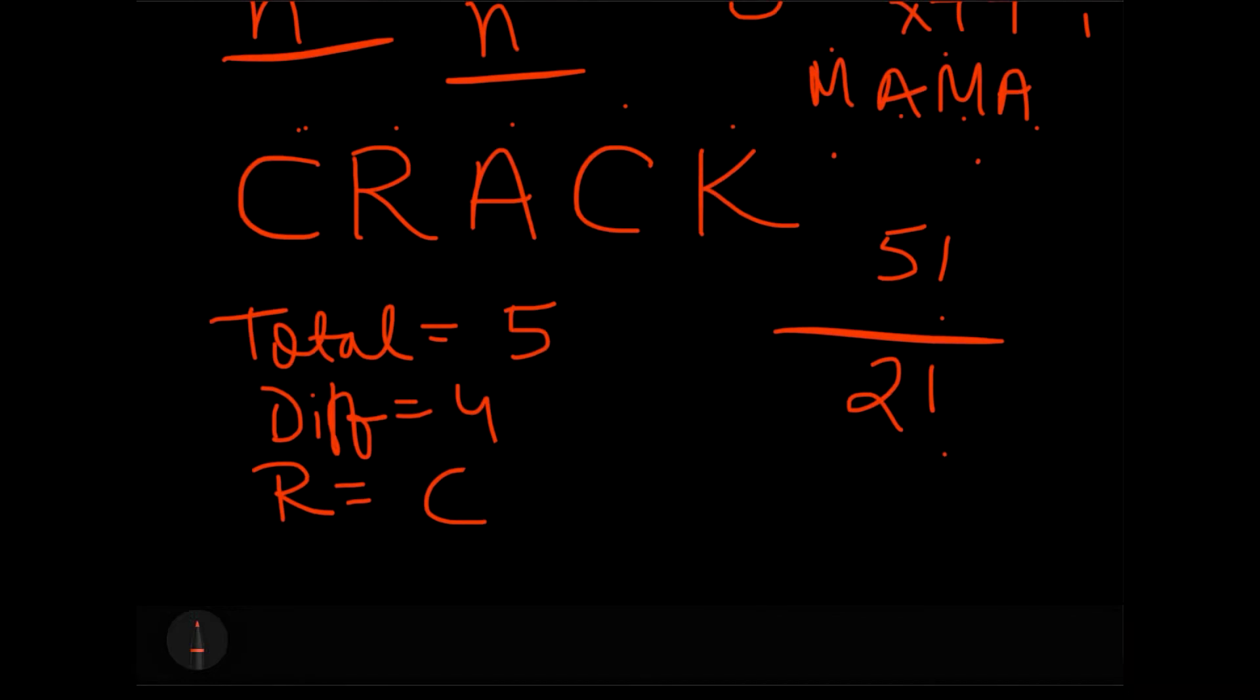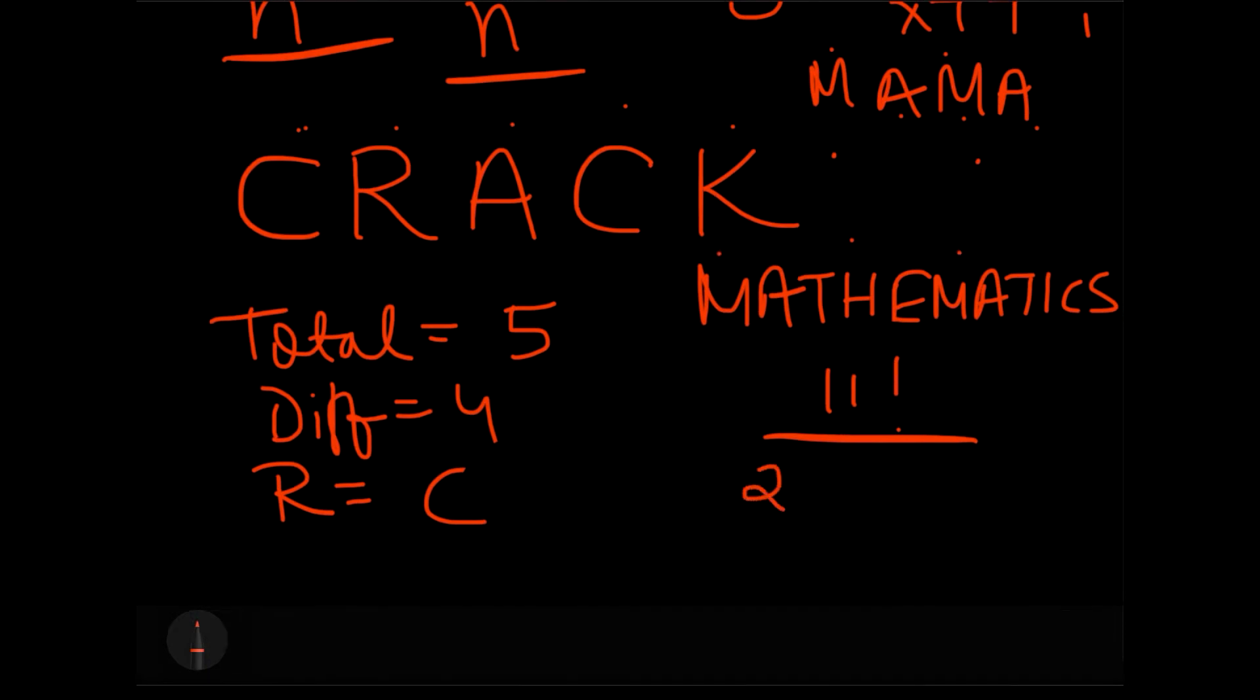Like this, if you get more words which are repeating, like there are very common questions in PnC which you will find on internet: Mississippi, Management, Mathematics. These terms have many words which are repeating. A small example, if you are finding a word like MATHEMATICS. So mathematics has how many total letters in it? Eleven letters. So 11 factorial. Now I know that M gets repeated two times, so I'll divide it by 2 factorial for M. A gets repeated two times, so I'll divide it by 2 factorial. T gets repeated two times, further 2 factorial. H is not repeated, E is not repeated, I is also not repeated, C and S are also not repeated.